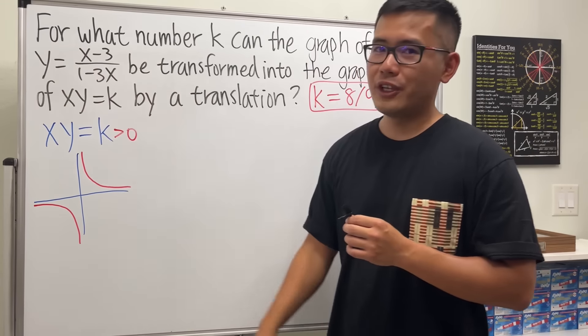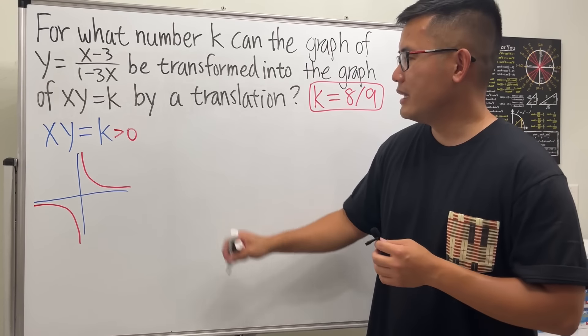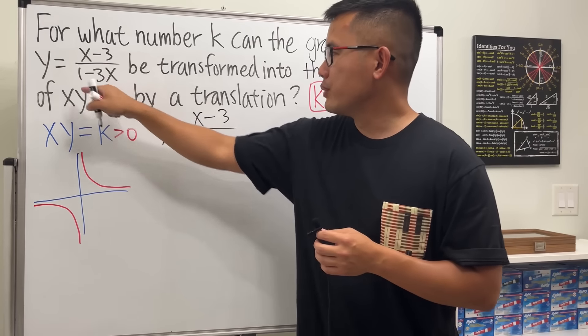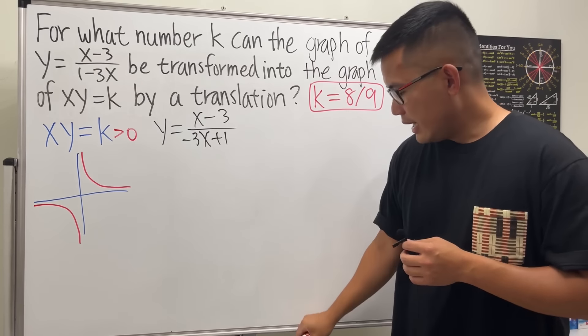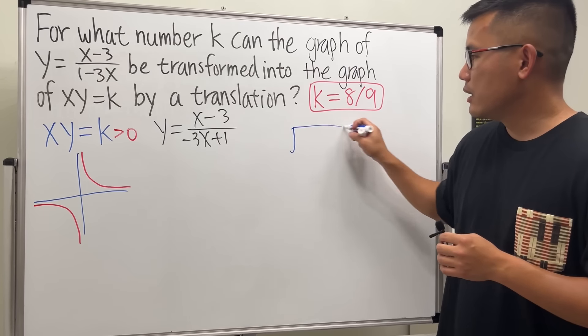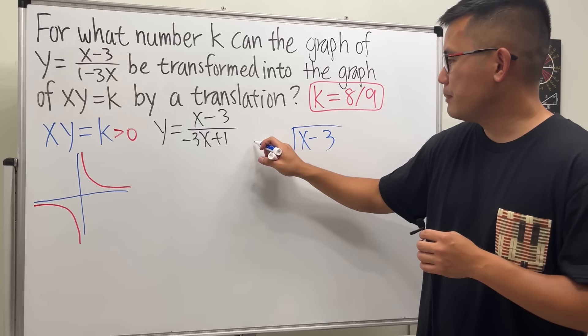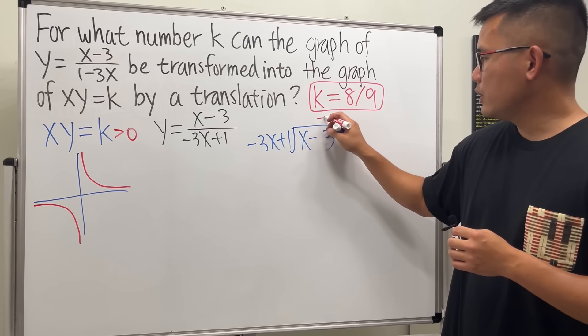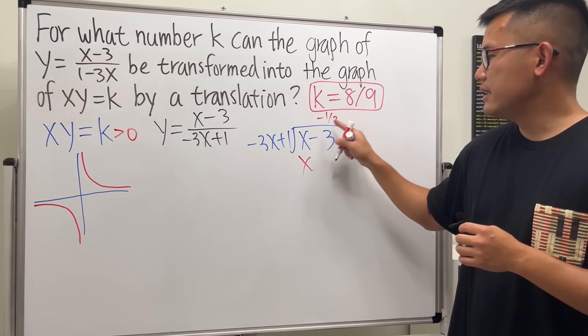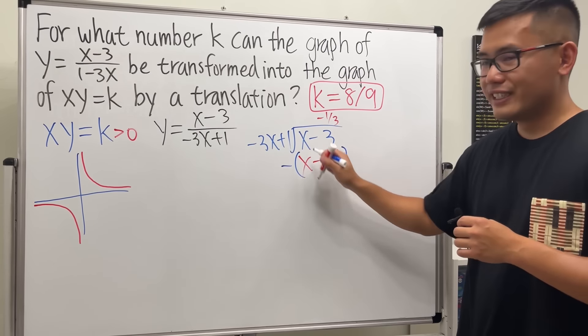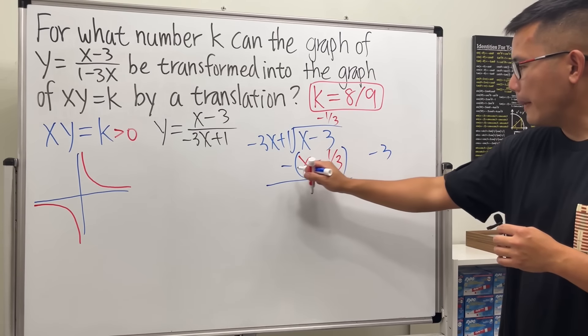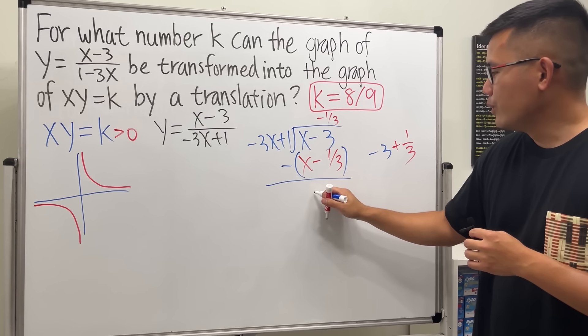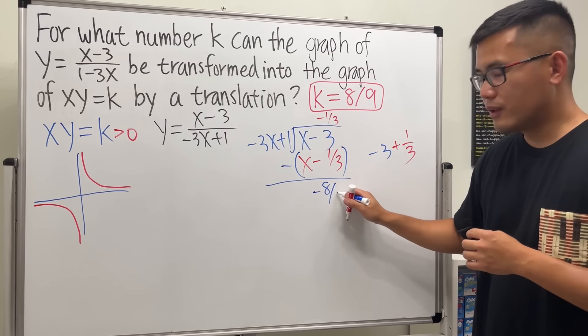We have a rational function. Let's put this into a nicer form and let me show you. We have y equals (x minus 3) over... Let me just put that first. So we have negative 3x plus 1. And let's go ahead and do polynomial long division. So we have x minus 3 and then divided by negative 3x plus 1. And then I'm just going to put down negative 1 third, because negative 1 third times that will give us x. And this times that is negative 1 third. And then subtract. This minus that is 0. And then here we have negative 3 plus 1 third. And then get your common denominator and all that. We will get negative 8 over 3. Okay?